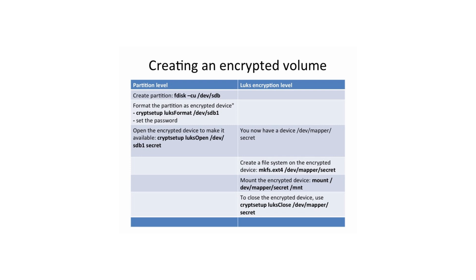This is exactly the level where things often go wrong. What I see too often is that people do well up to the step where they need to open the device using cryptsetup luksopen on /dev/sdb, but then they try to create a file system using mkfs.ext4 on /dev/sdb1. That is wrong! Because when you use mkfs.ext4 on /dev/sdb1, you are removing the encryption layer, meaning you have to start all over again. Make sure to distinguish between tasks on the partition level and tasks on the LUKS encryption level.